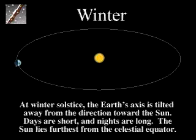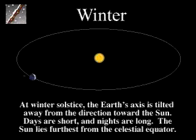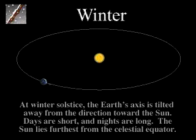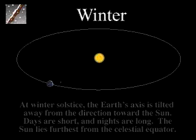This animation shows the relationship between the fixed angular tilt of Earth's axis and the location in its orbit around the Sun for the different seasons over the course of an entire year. The Earth and Moon are enlarged for clarity, but are shown with the correct orbital orientation, relative speed, and orbital rate with respect to each other.